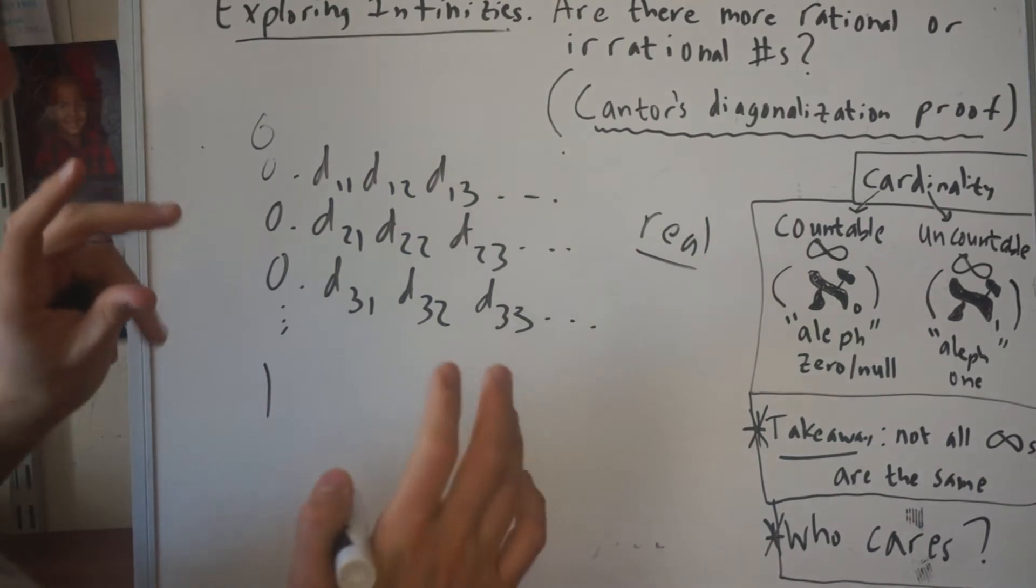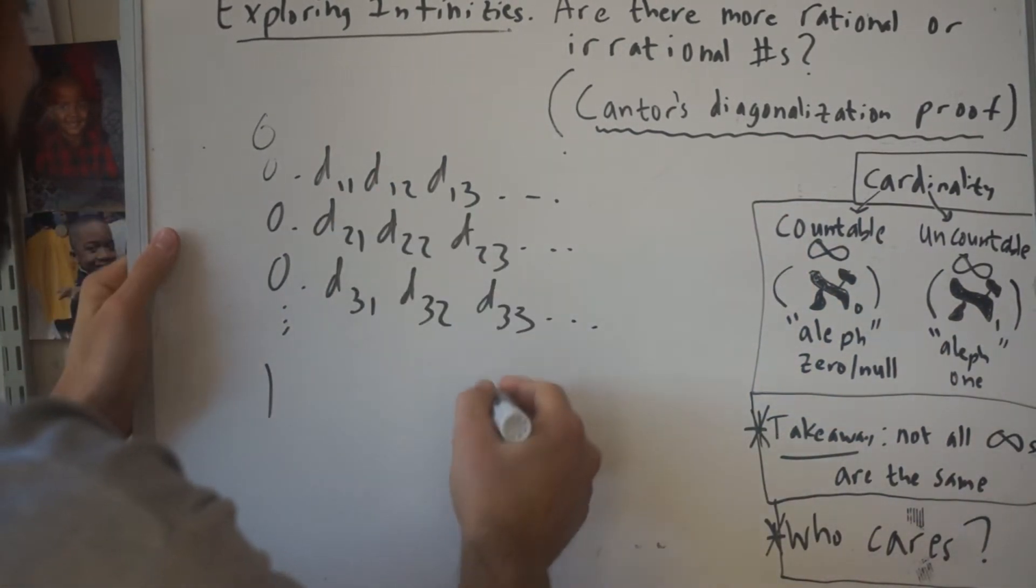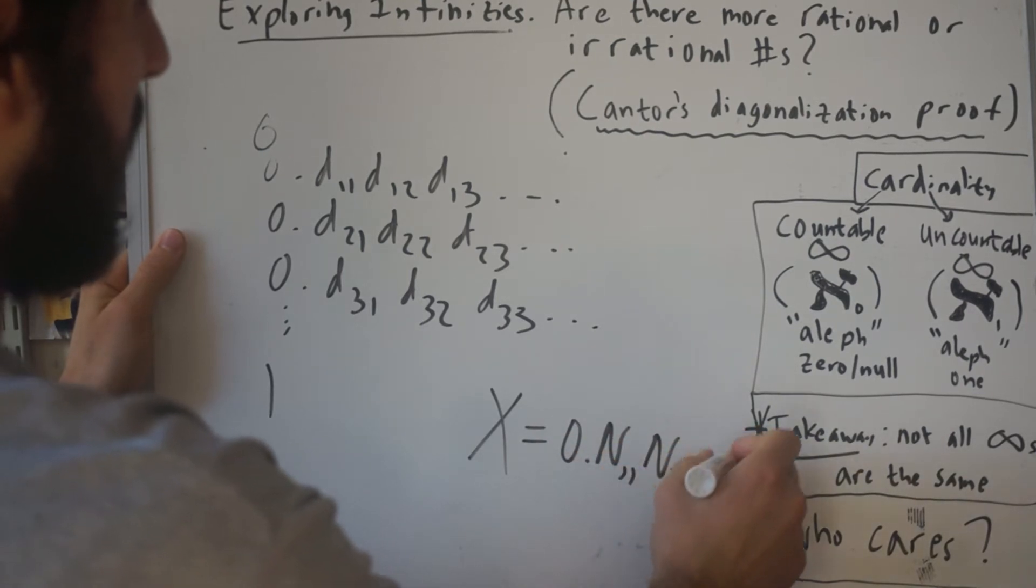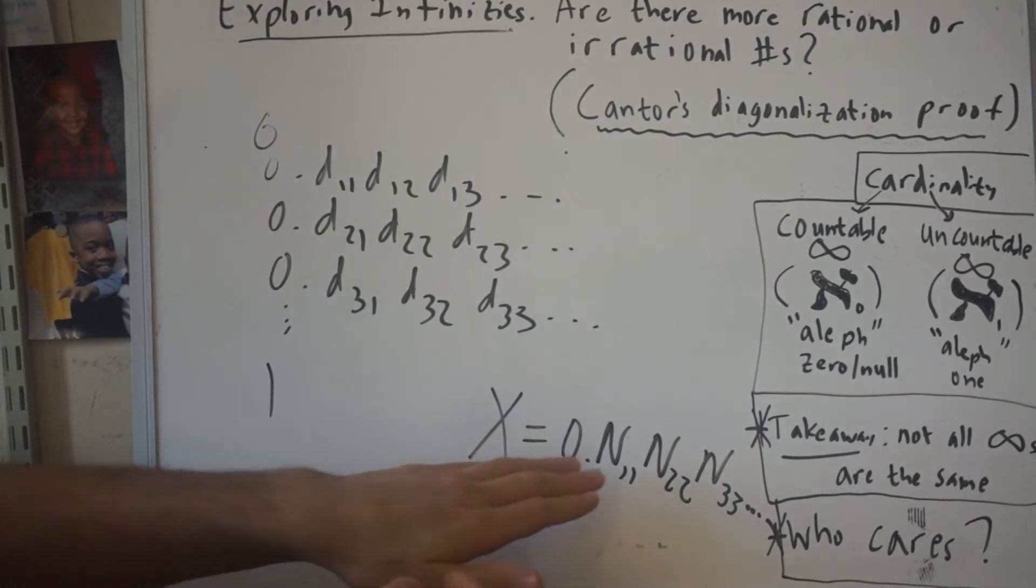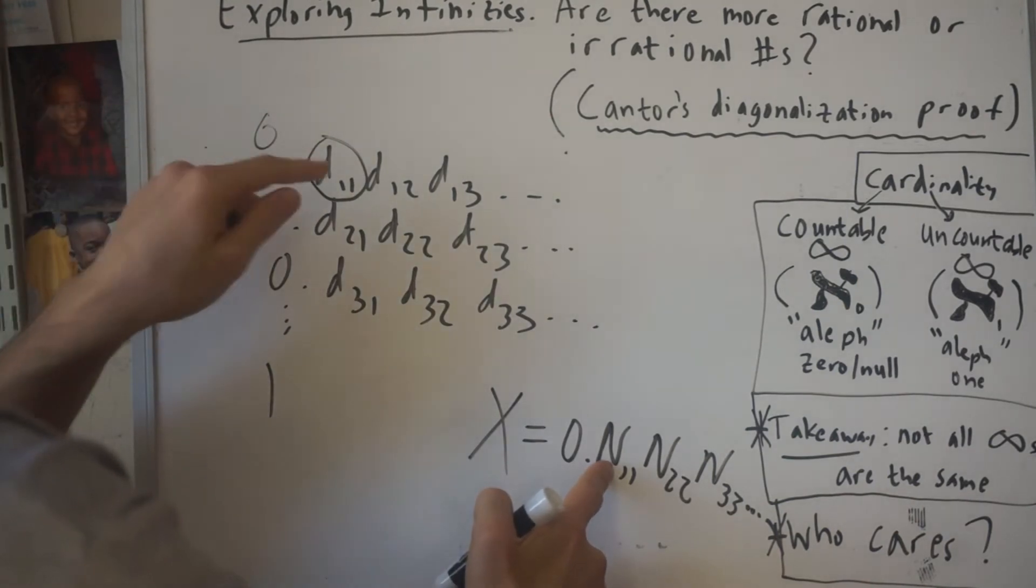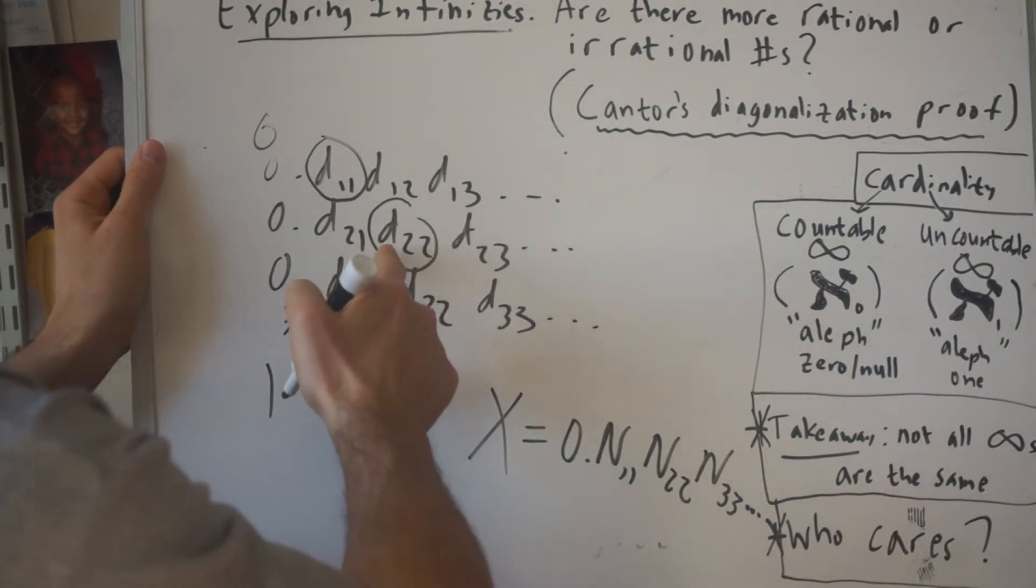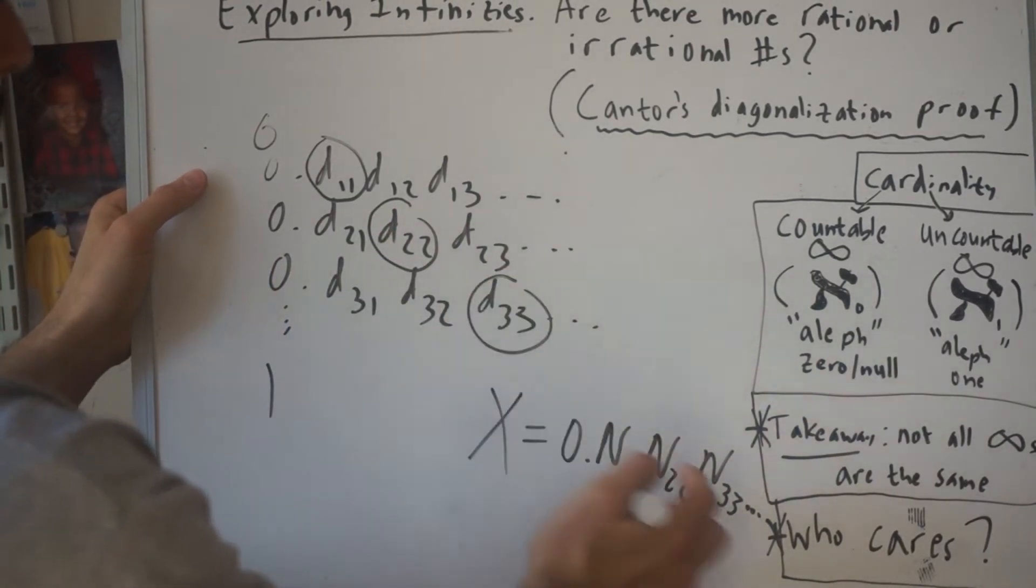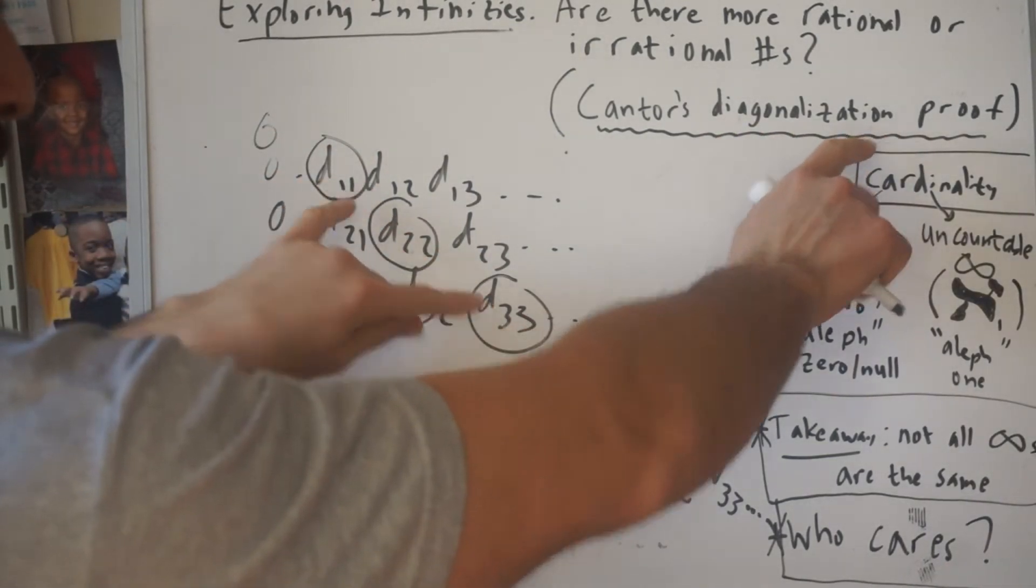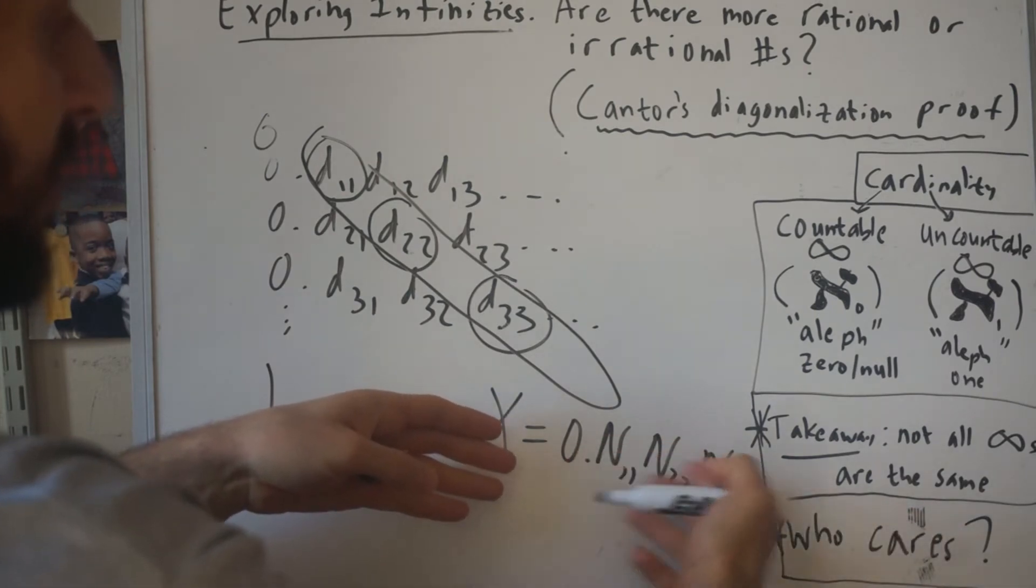Here is the clever diagonalization argument. Cantor is going to create a new number, let's call it x. It's going to be 0.n₁₁n₂₂n₃₃... We're going to create a new number where n just means not. Whatever this digit is, this first digit, you can pick any digit you want but not that digit. So let's say this was a 4, we could pick a 7. The second digit can be anything you want except it can't be this digit. So if this is a 3, we'll pick a 5. The only constraint is these can be whatever you want, zero through nine, except they can't be these digits because these are the diagonal digits. That's why it's called the diagonalization proof.